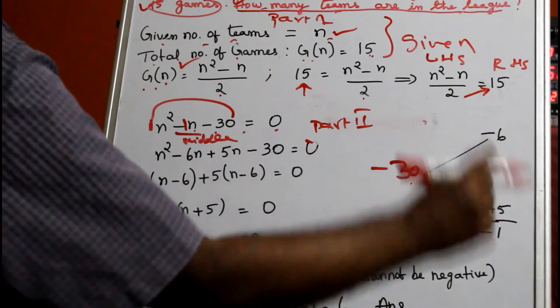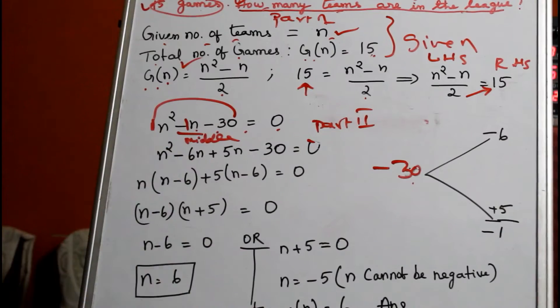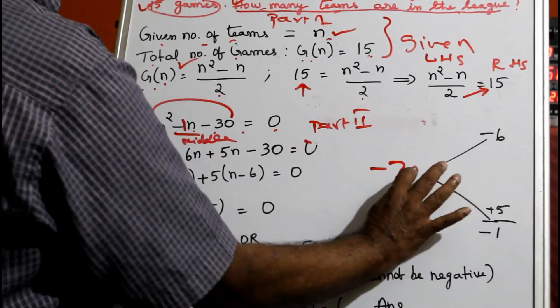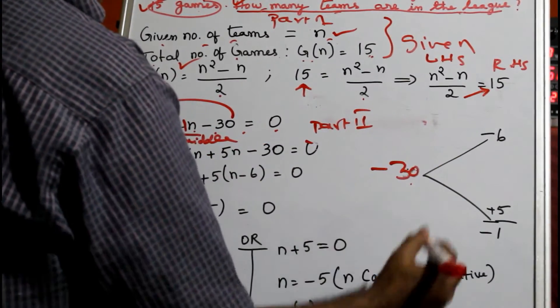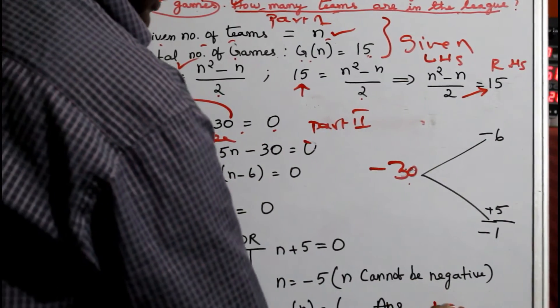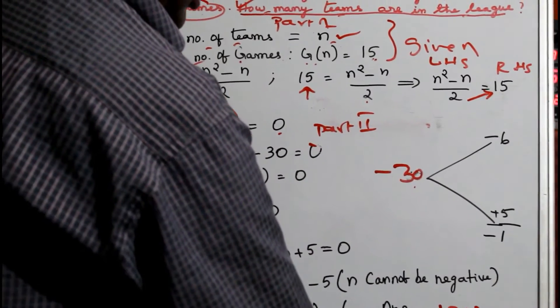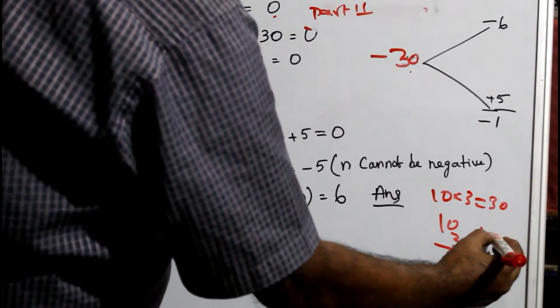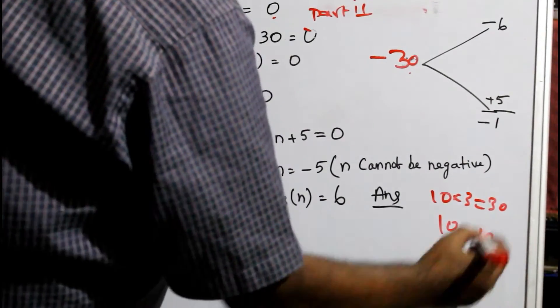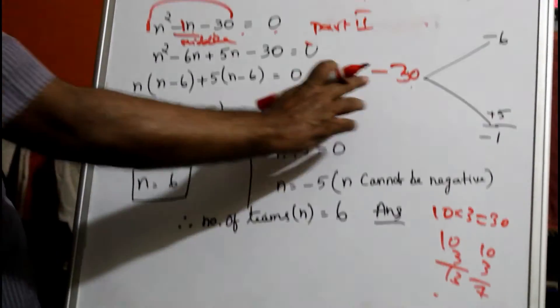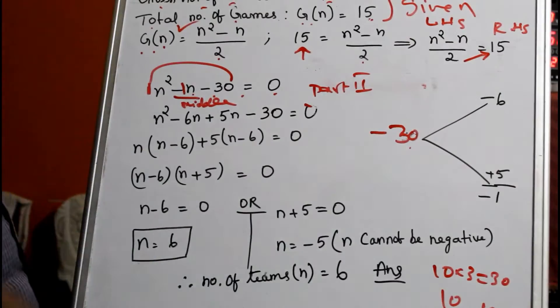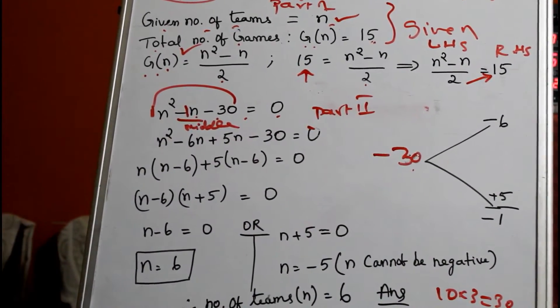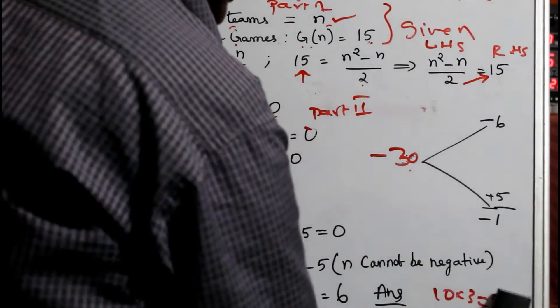30 into 1 is 30. I told you, don't put the sign, just hide this number. Take this 30. You can find the factors, for example 10 × 3 = 30. Add and subtract: 10 + 3 = 13, 10 - 3 = 7. Both are not matching, so take this number.